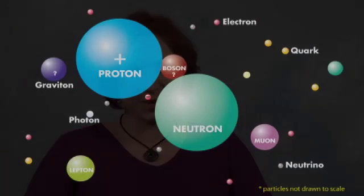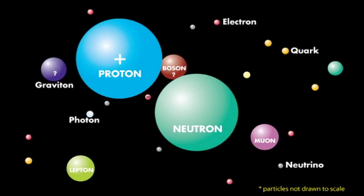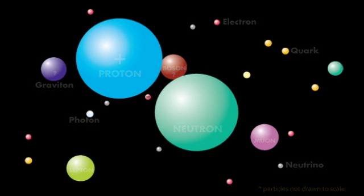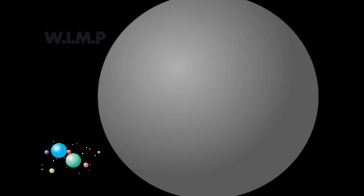Particle dark matter could be much smaller than the electron, or it could be much larger than the proton. In general, what people think particle dark matter is, it's probably something we call a WIMP, a weakly interacting massive particle. And here we're talking about particles that are a hundred times as massive as a proton.